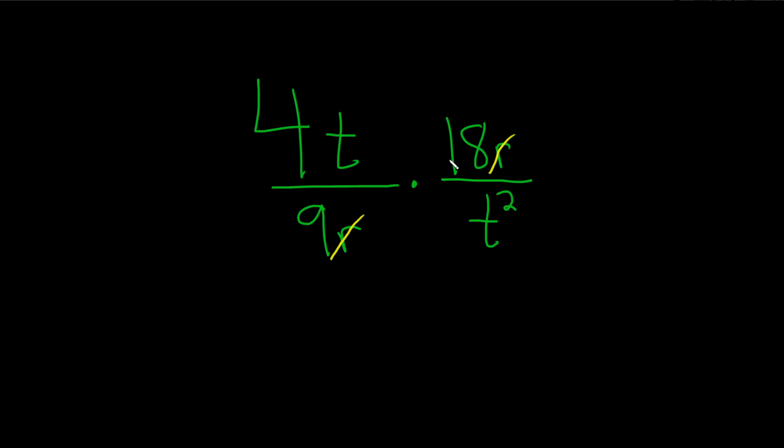And then the 9 and the 18 can also be simplified, because 9 goes into 9 one time. So we cross it out and put a 1. And then 9 goes into 18 two times, so you cross it out and put a 2.